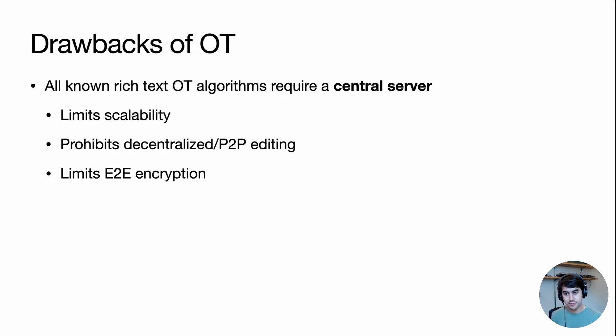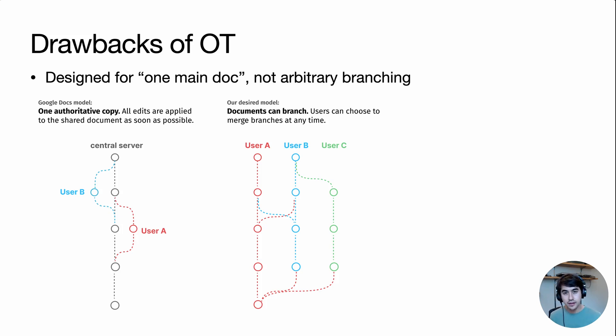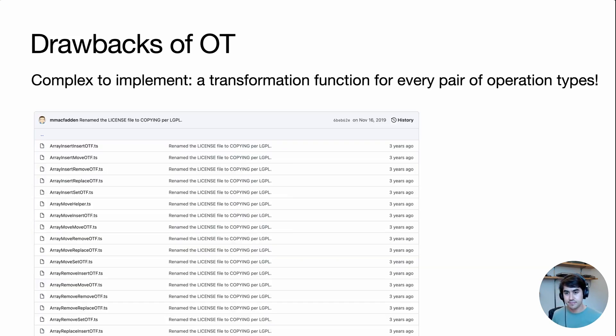However, there are some drawbacks to the OT approach. A major drawback is that all the known rich text OT algorithms that correctly converge require a central server. This can limit the scalability of an algorithm, it also prohibits decentralized editing workflows, and limits the ability to apply end-to-end encryption. Another drawback of OT is that it's designed for a particular kind of editing workflow, where there's one main document and edits are being applied to that shared document as soon as possible. OT isn't designed for more flexible branching and merging workflows, where there can be many versions of a document simultaneously, and they can be merged into each other at any time. Finally, OT can be complex to implement because it requires a different transformation function for every pair of operation types.